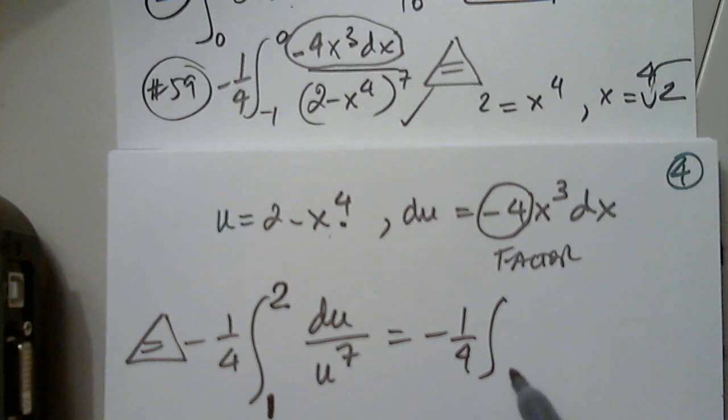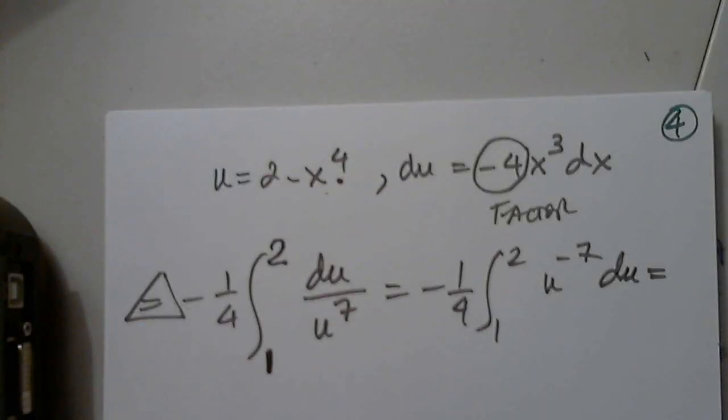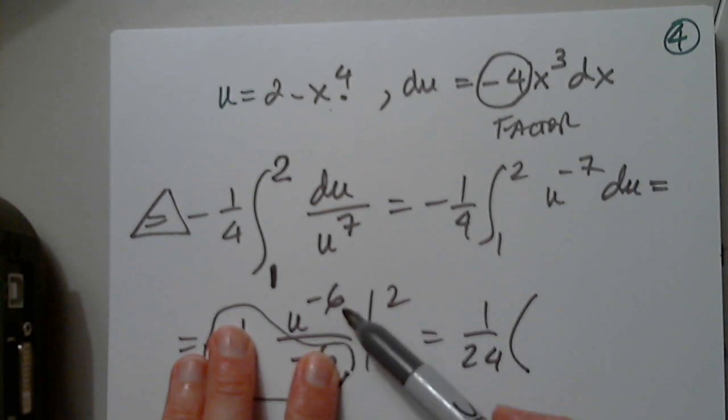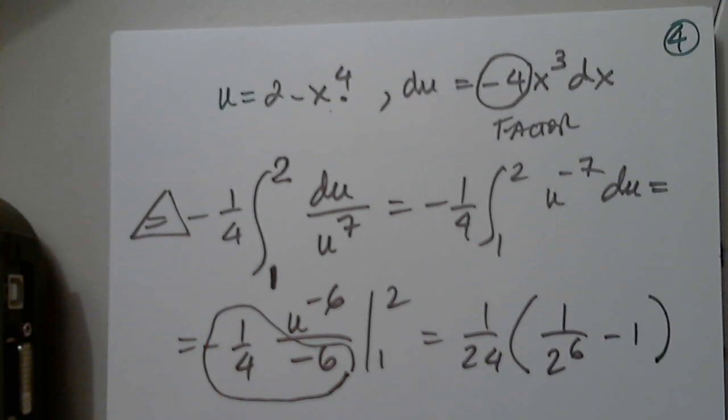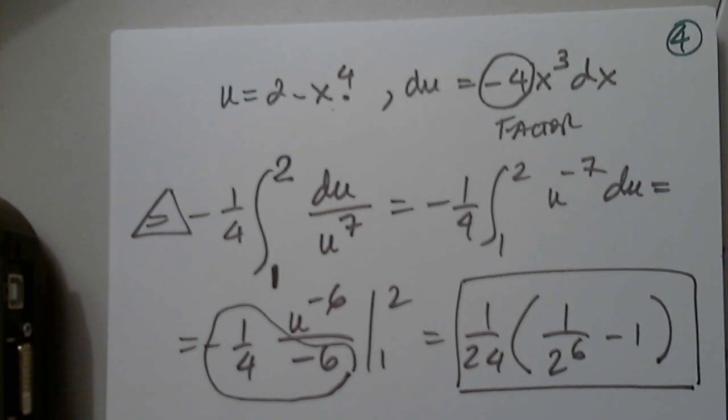I will change this into the integral from 1 to 2, from u to negative 7 du. And, of course, I have negative 1/4, u to negative 6 over negative 6, from 1 to 2. Leave the constant outside. Multiply it and get 1 over 24 and leave it alone. So, u to negative 6 is 1 over u to the 6th. 1 over 2 to the 6th minus 1. When I plug in 2, I get 1 over 2 to the 6th. When I plug in 1, I get 1. You can leave it alone. 1 over 2 to the 6th minus 1, as is.